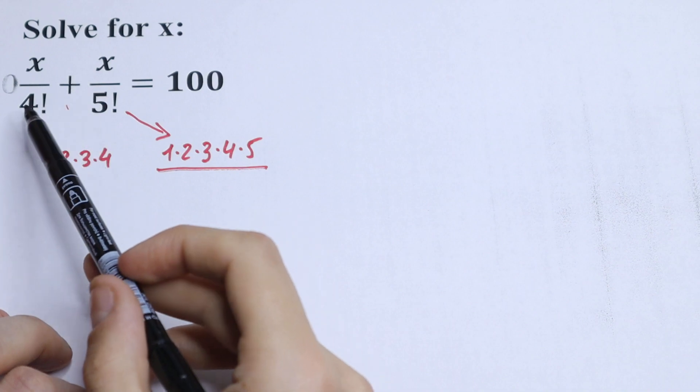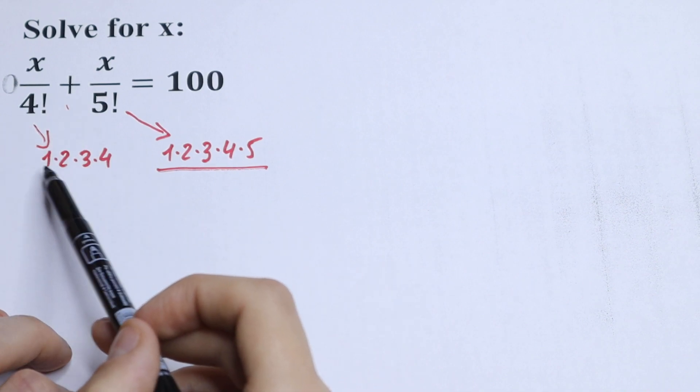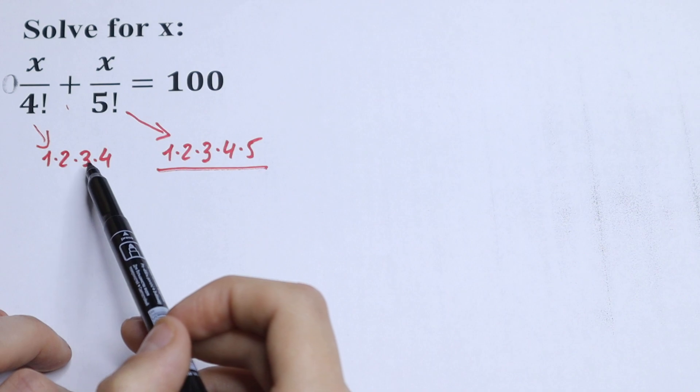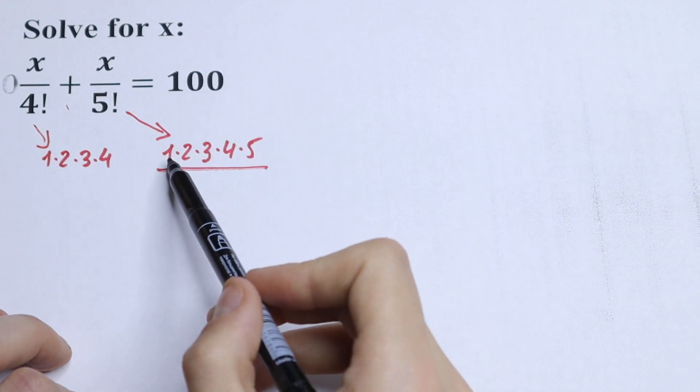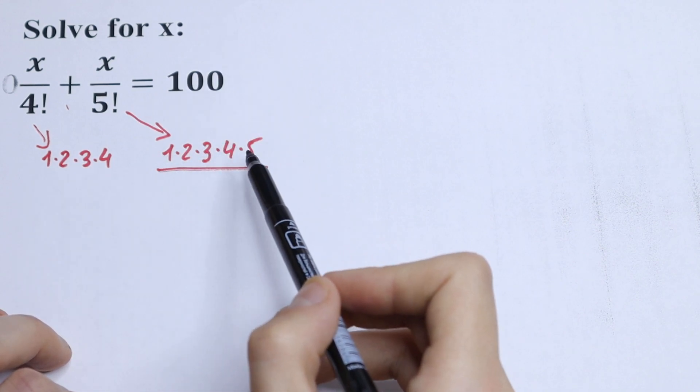So how can we solve this? We all know that 4 factorial can be written as various products: 1 times 2 times 3 times 4, and 5 factorial is 1 times 2 times 3 times 4 times 5.